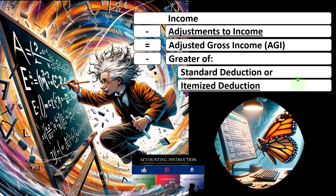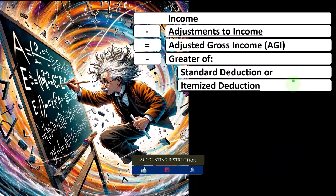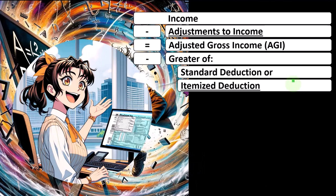Why is that? Because deductions are good. And you're going to get either one of these, but not both. And therefore, you're only going to take the itemized deductions if they're larger than the standard deductions.